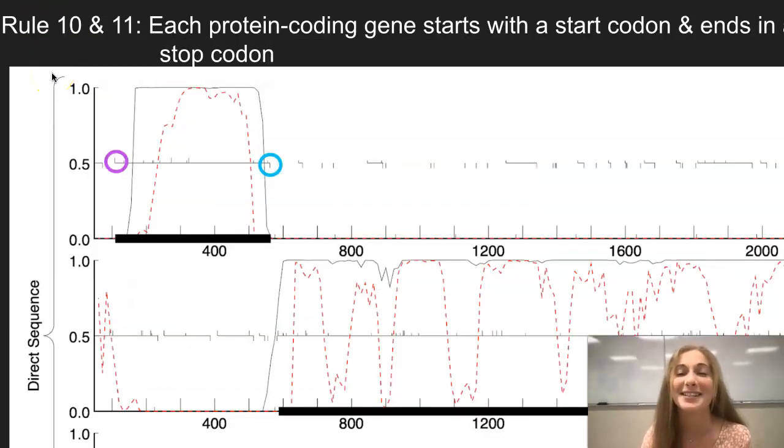Rules 10 and 11 talk about start and stop codons. On this screenshot of GeneMark right here, within this purple circle, this uptick signifies a start codon, which starts the coding for this gene right here. Start codons are made up of three nucleotides, and the start codon of TTG only happens 10% of the time.